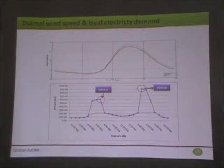Looking at the correlation between local wind conditions and local demand, the correlation is not very strong. It is partially correlated in the evening, but in the morning there is no wind, so there is limited possibility to use wind energy in the morning. This justifies the need for another energy system for better reliability of power supply in that area. The peak demand in the morning is around 600 kilowatt and in the evening is 900 kilowatt.